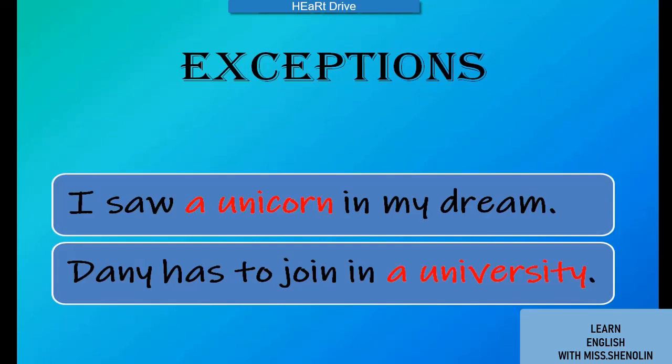Similarly, 'Danny has to join a university.' 'University' — 'u' is pronounced 'yu,' giving a consonant sound. So we have to add 'a' before it because it gives a consonant sound.